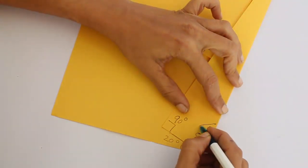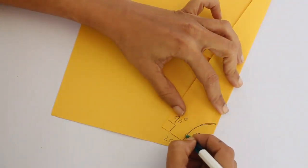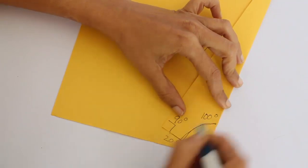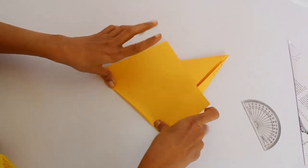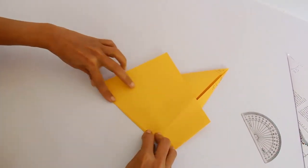This total is 80 plus 20, which is 100 degrees. Now we will fold this along the crease.